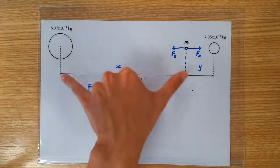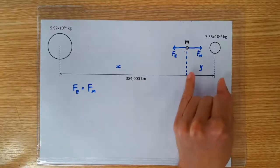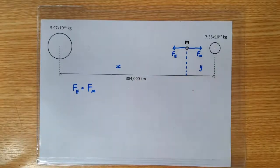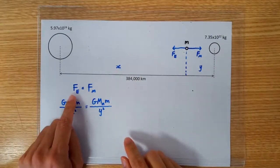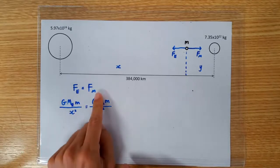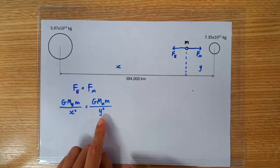Let's call this distance x and let's call this distance y. We next write the Earth's gravitational pull as GMm over x squared and the Moon's pull as GMm over y squared.